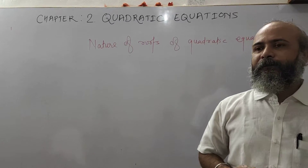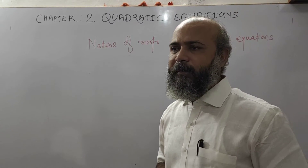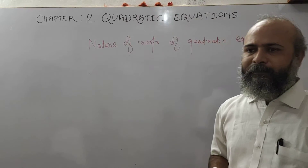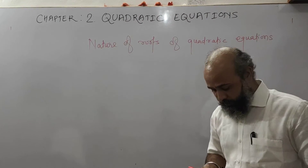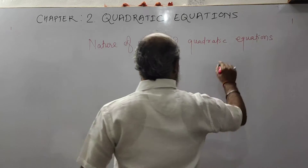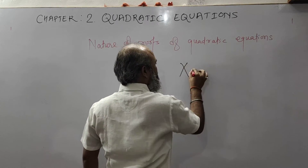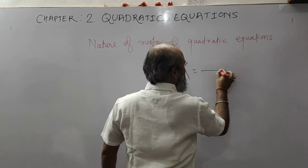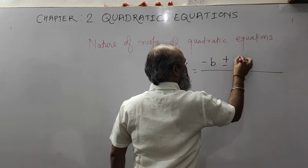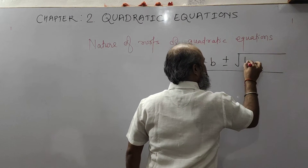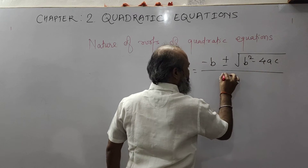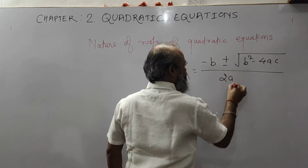We have solved the quadratic equation by using the formula method. What is the formula method? X is equal to minus B plus minus root of B square minus 4AC, divided by 2A.